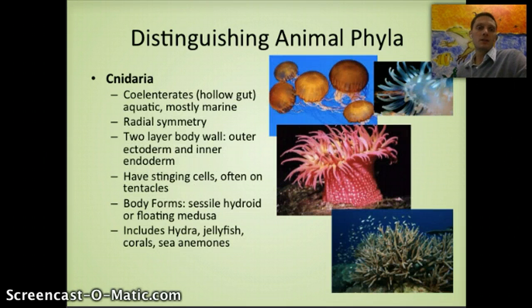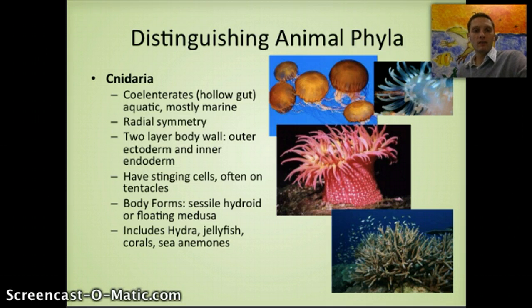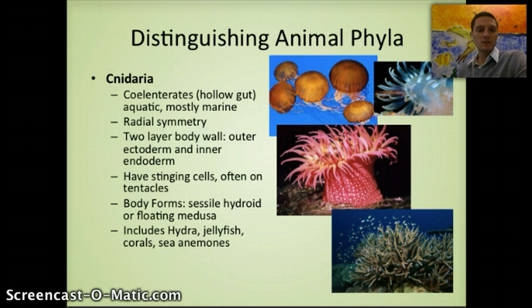The second phylum is Cnidaria — a really cool group including organisms with a hollow gut. They're mostly marine and aquatic, and include jellyfish, sea anemones, coral, and hydra — some really beautiful organisms. They're a bit more complex than sponges and have two different body forms: a sessile hydroid form or a floating medusa form.